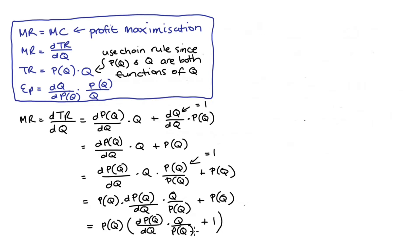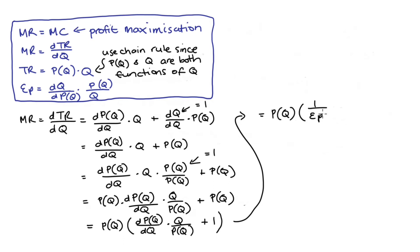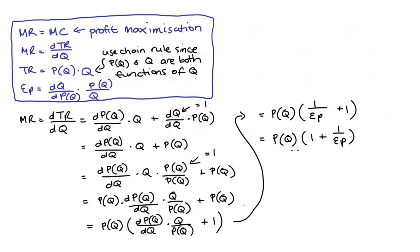What I hope you notice is that this first term in the parentheses is just the inverse of our price elasticity of demand — basically our elasticity but with the numerator and denominator switched around. This means we can rewrite this as price times the inverse of our elasticity of demand, so one over epsilon P plus one. This is usually rewritten as price times one plus one over epsilon P, which is equivalent and easier to interpret. I do have a video that focuses on the interpretation of these conditions, so I'll link that below in case you're interested.